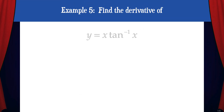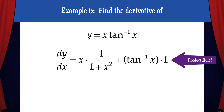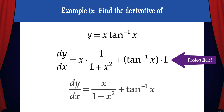Alright, let's do one more example. Example 5: Find the derivative of y equals x times tan inverse of x. To solve this we need to apply the product rule. This gives us x times the derivative of tan inverse x, which is 1 over 1 plus x squared, plus tan inverse x times the derivative of x, which is just 1. Then we can write our final answer: dy/dx equals x over 1 plus x squared plus tan inverse x.